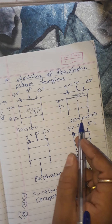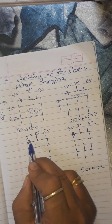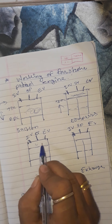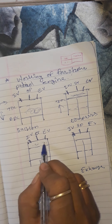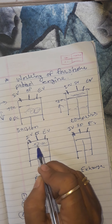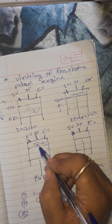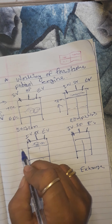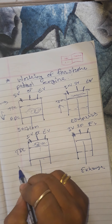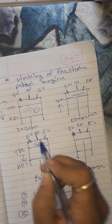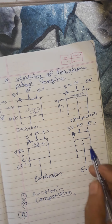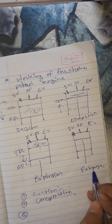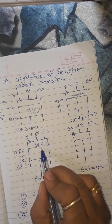Third stroke — expansion or power stroke: at the end of the compression stroke, the spark plug ignites a spark, causing an explosion of the charge. Power is generated, pushing the piston from TDC to BDC. Both valves remain closed during this stroke.